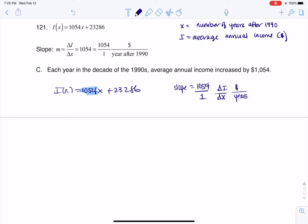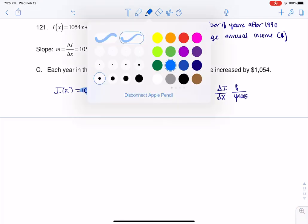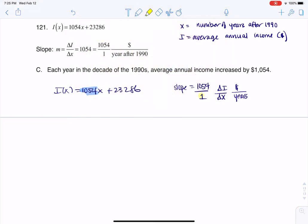So really what this is saying is, for every one year past 1990 - 1990, 1991, 1992 - so for every year past 1990, at least in that decade that we had the data, we can see that the numerator is increasing because it's positive. So then our income, our average annual income, is increasing by $1,054.